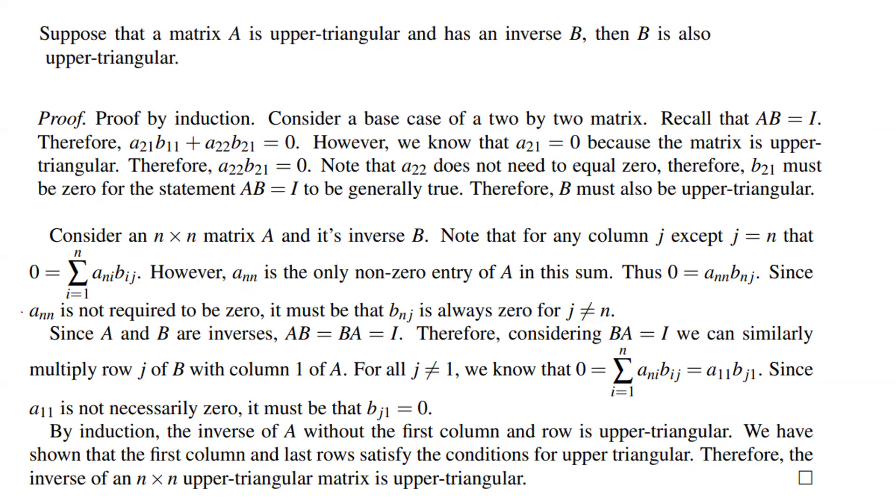Since aₙₙ is not required to be zero, it must be that bₙⱼ is always zero for j ≠ n.